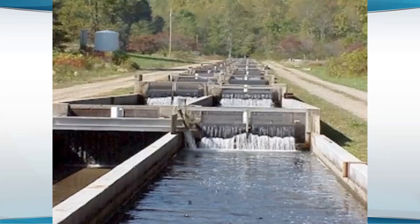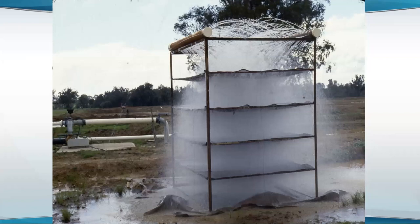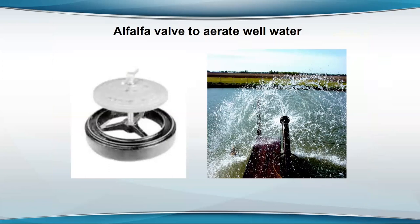In a hatchery using well water, they run the water through a screen where it falls through and gets aerated as it goes down. Where you pump water into a pond, you can put an alfalfa valve over the end of the pipe so it has to splash out to the sides — you get some degree of aeration, but not a whole lot.